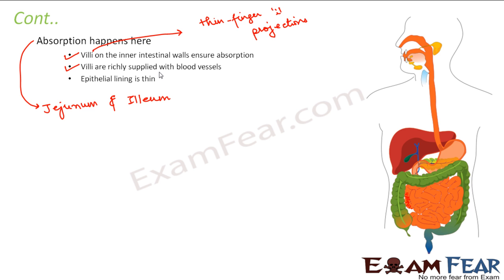The epithelial lining of the small intestine is thin. Since villi are attached to blood vessels, a thin epithelial lining allows easier diffusion of nutrients from the villi into the blood vessels. Thick walls would slow diffusion, so thin walls favor efficient transfer of nutrients — these are the features that support absorption in the jejunum and ileum.